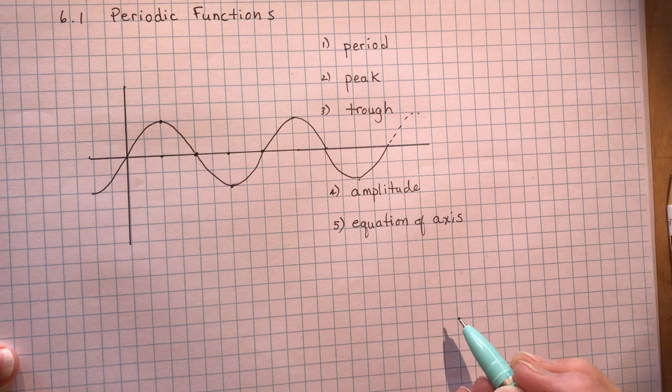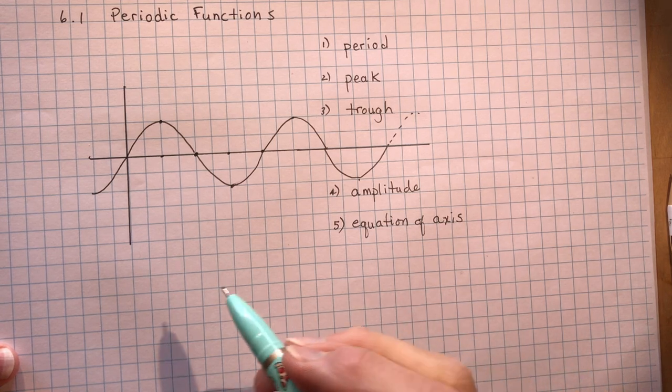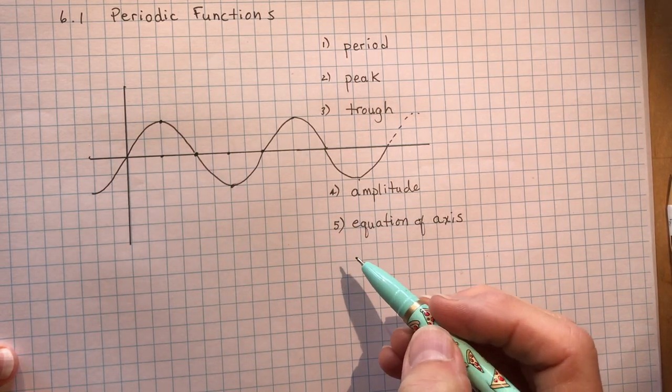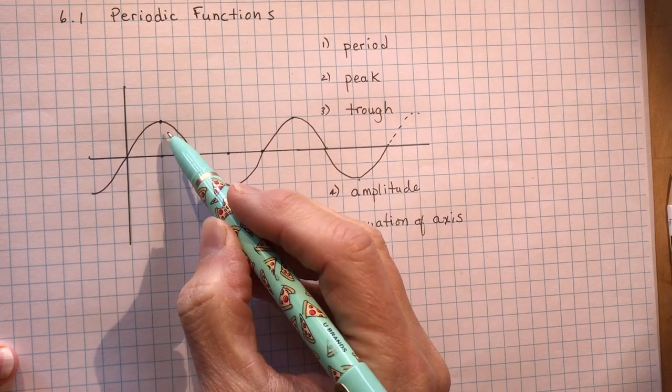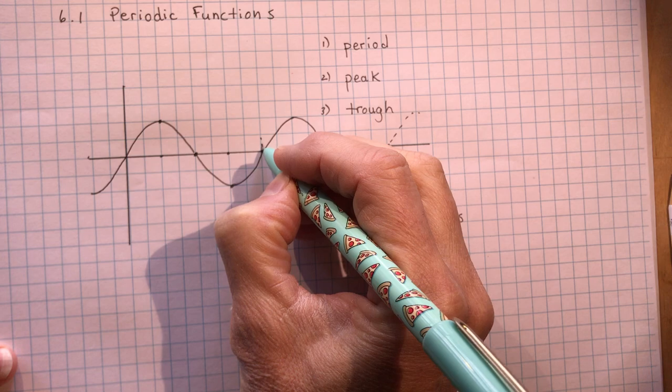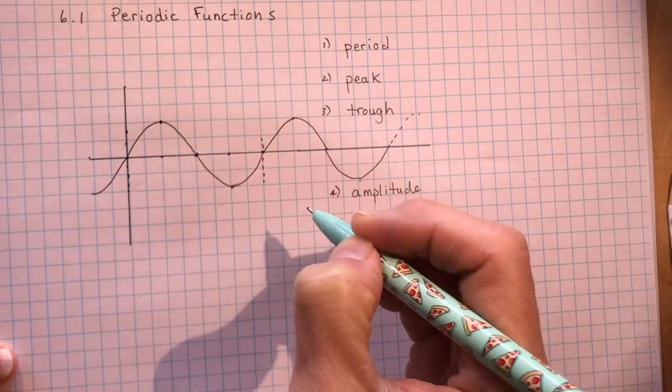Now the period of the function depends on how long it takes for the pattern to repeat. So as you're going through this chapter, this distance from here to here can take on different meanings depending on the context of the word problem.